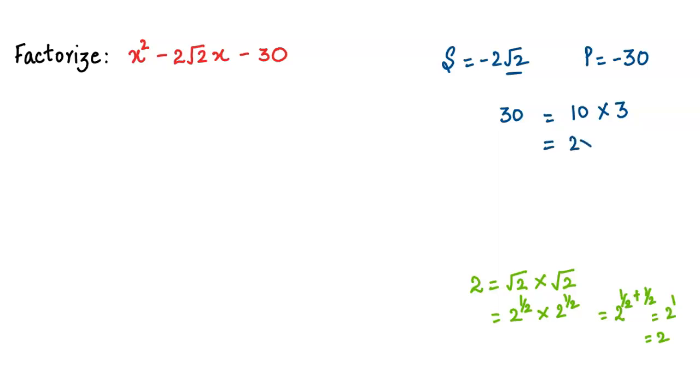Now 10 can be written as 2 into 5 into 3, and 2 can be written as √2 into √2. So 2 into 5 into 3. Now for the manipulation we can write it as 5√2 into 3√2.